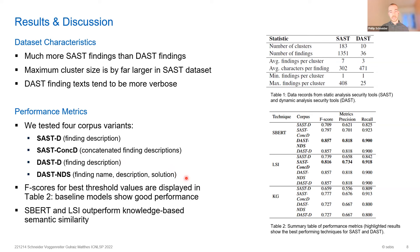Table two shows the results. The main finding is that SBERT and LSI outperform the knowledge-based method with WordNet. In general, the models performed better in terms of recall than precision, which means it was easier for them to retrieve findings that matched the human-annotated clusters, but they sometimes generated false positive clusters — meaning precision was lower.